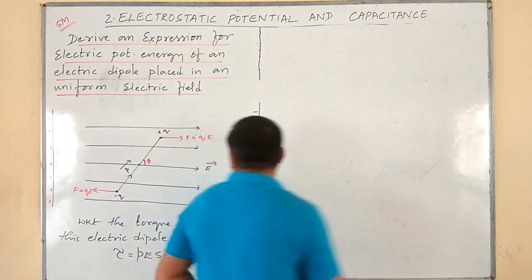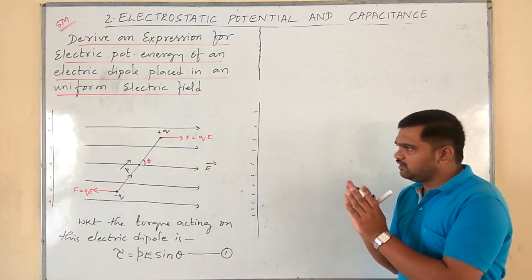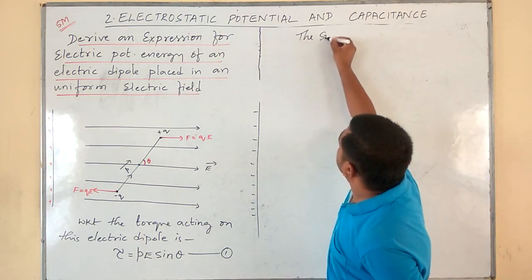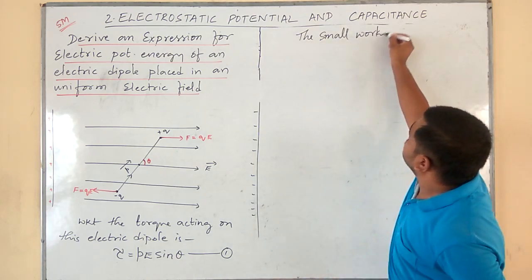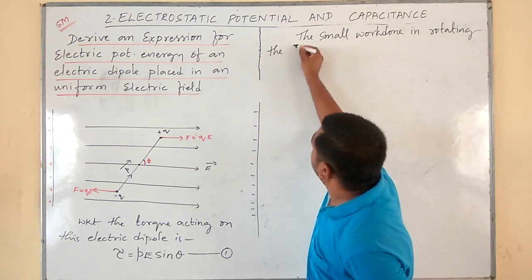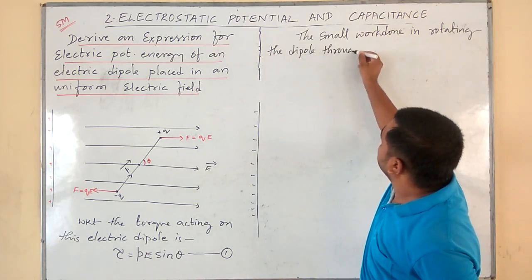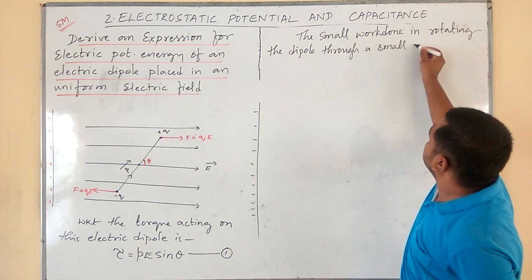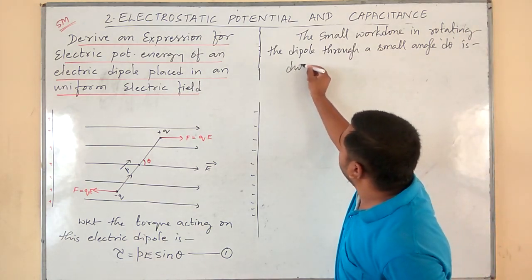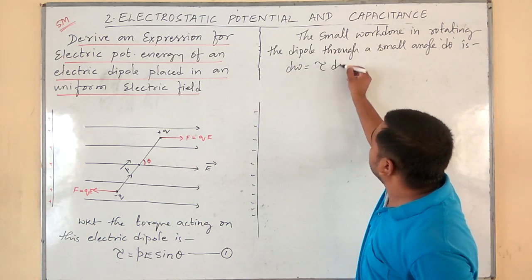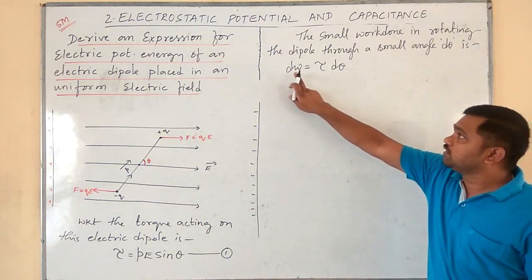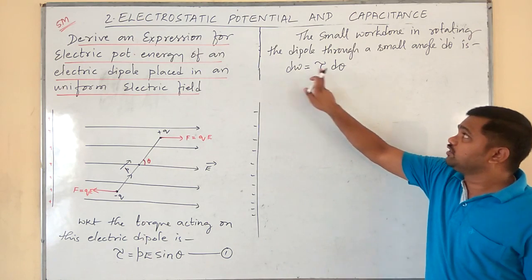Now I will rotate the electric dipole through some small angle dθ. The small work done in rotating the dipole through a small angle dθ is given by dW = τ · dθ, according to the system of particles and rotational motion chapter, where W = τ · θ.